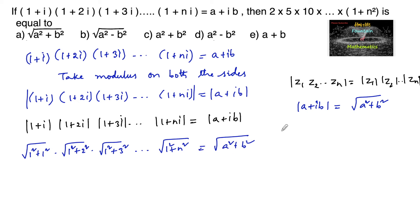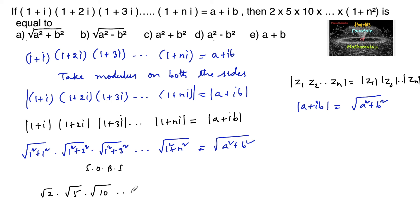Squaring on both sides: (√2)² · (√5)² · (√10)² · ... · (√(1+n²))² = (√(a²+b²))². That is, 1²+1²=2, 1²+2²=5, 1²+3²=10, and so on, root of (1+n²) whole square, equal to root of (a²+b²) whole square.